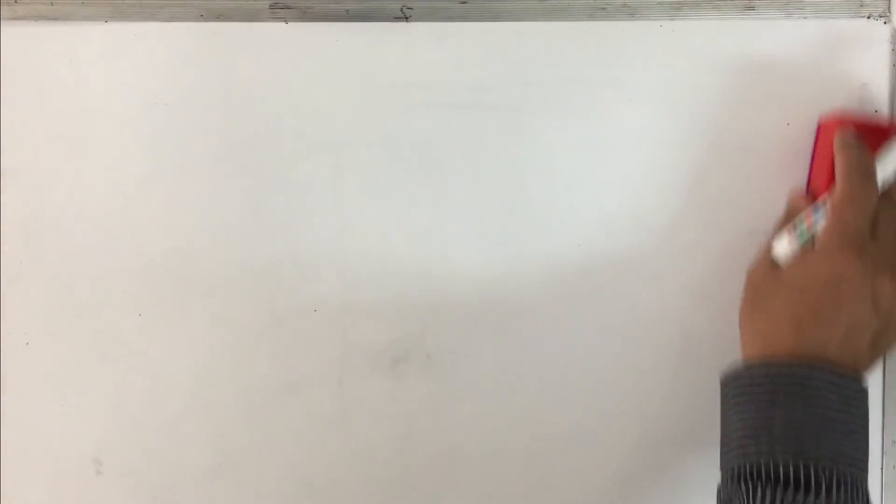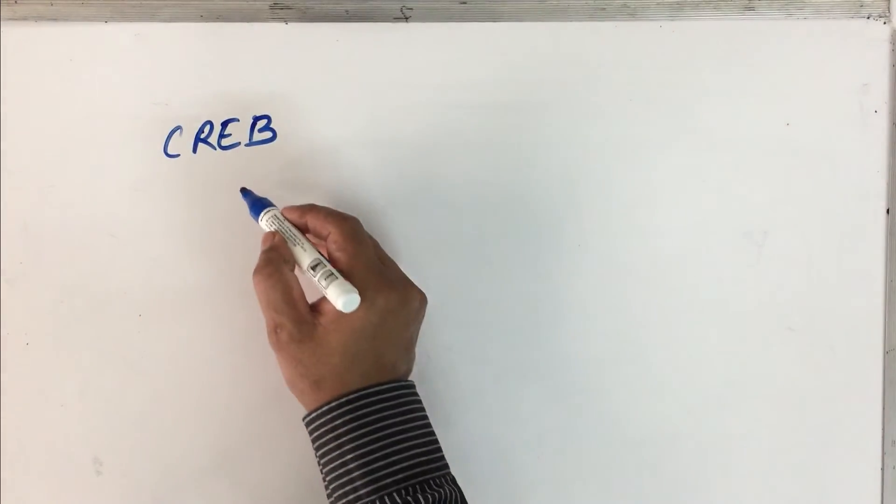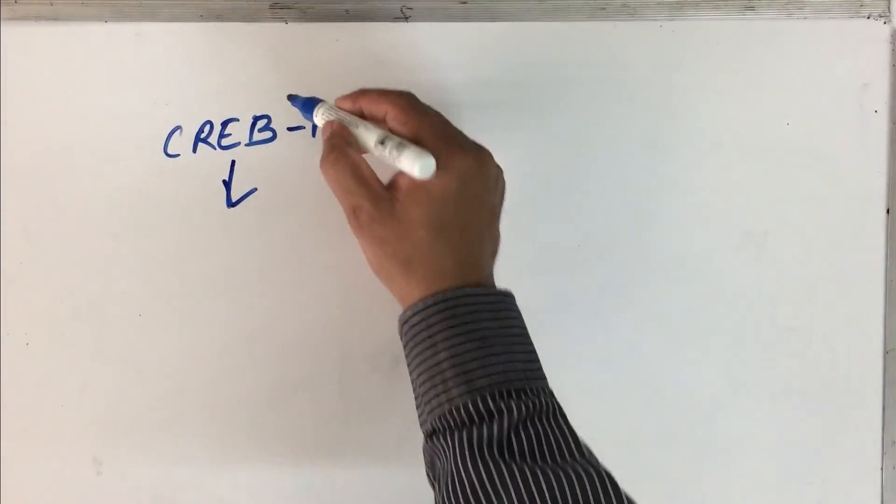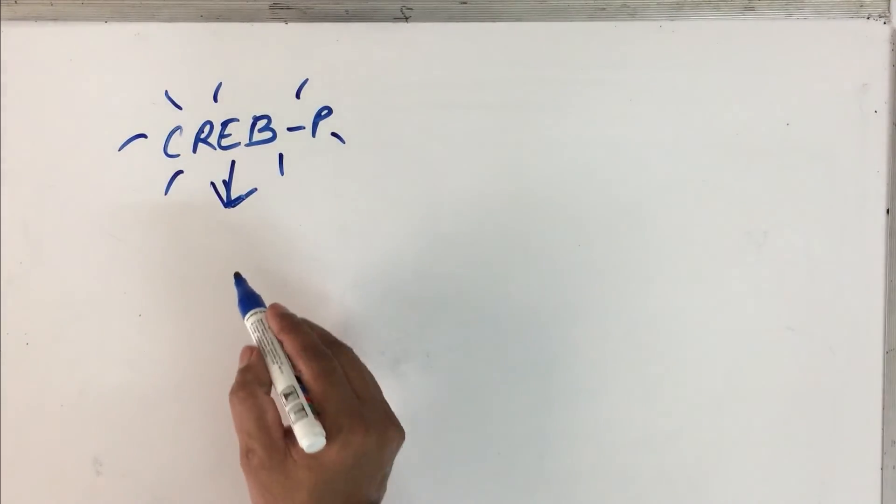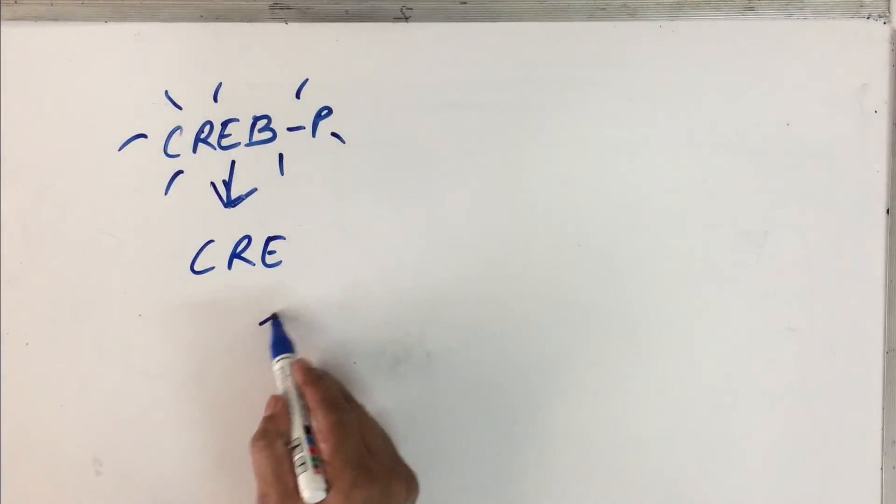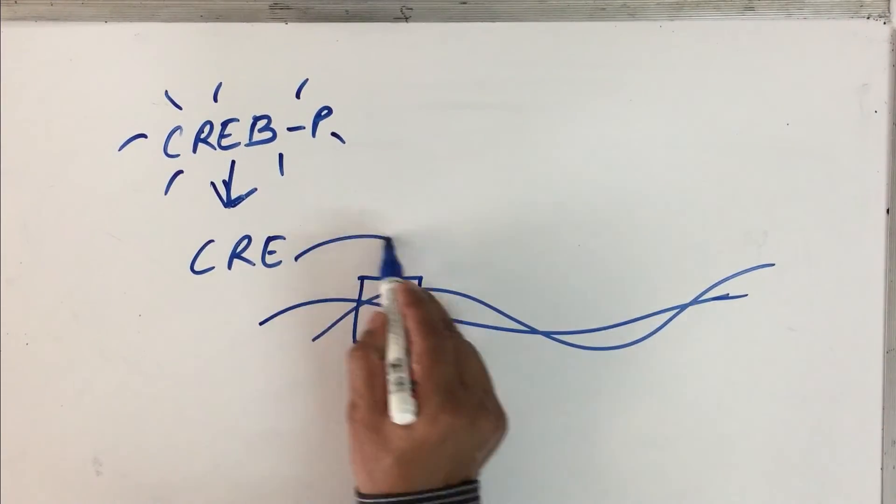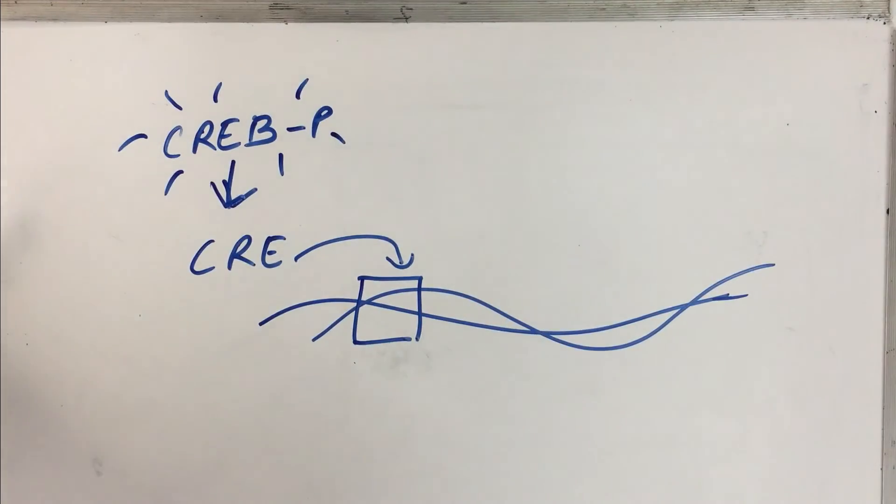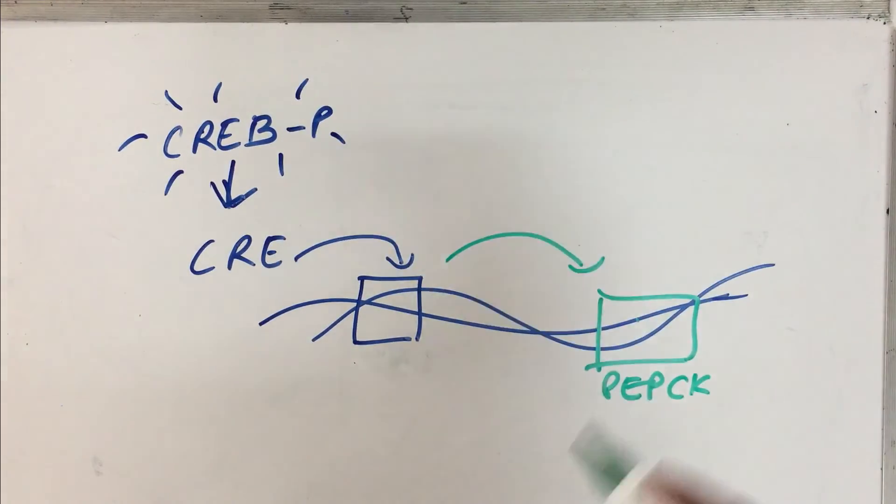Let us denote this by a simple diagram. You have CREB, cAMP response element binding protein, that will be phosphorylated. It is phosphorylated with the help of protein kinase A, so it is active. Now this is going to act on cAMP response elements. The cAMP response element, this is on the DNA, so it has a binding site. This cAMP response element will bind here. Once it binds, what it does is it will activate. Assume this is the phosphoenolpyruvate, PEP carboxykinase enzyme gene. The transcription of this gene is increasing. This is how PEP carboxykinase is regulated.